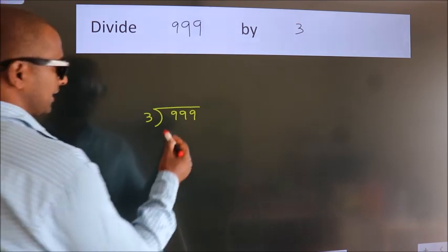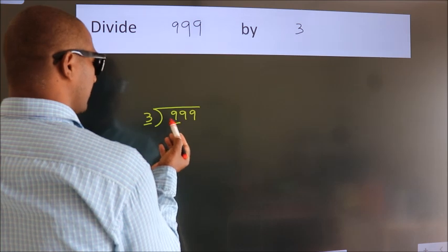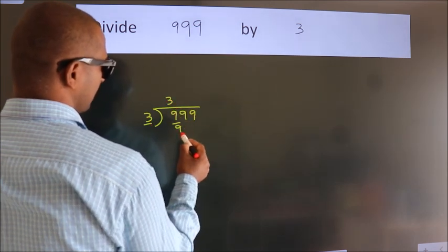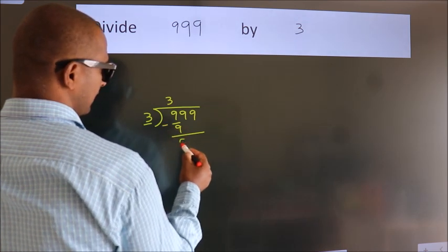Next, here we have 9, here 3. When do we get 9 in the 3 table? 3 threes, 9. Now we should subtract. We get 0.